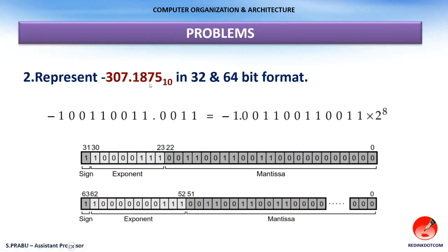Problem 2: −307.1875. This is also a decimal number. Convert this decimal number to its equivalent binary fractional number, then normalize it by shifting the dot to the correct position. Write this number in 32-bit or 64-bit format. You can cross check the answer provided.